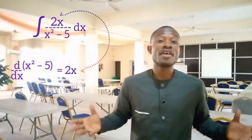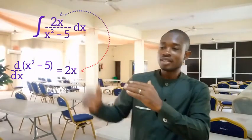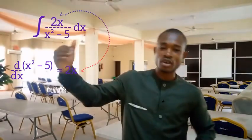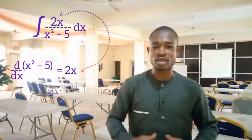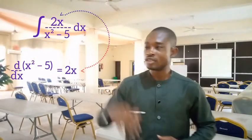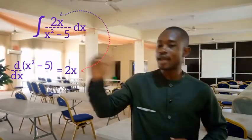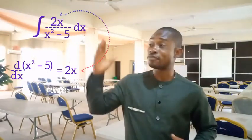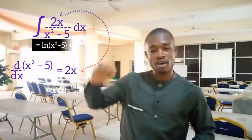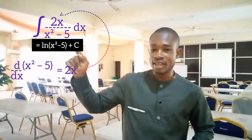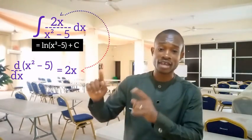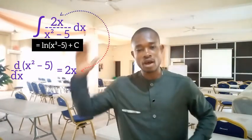Since the derivative of the denominator gave us what is in the numerator, the integral of this expression — 2x over x squared minus 5 dx — is equal to ln of the denominator. That is, ln(x squared minus 5) plus C.